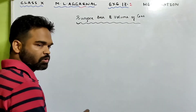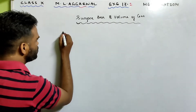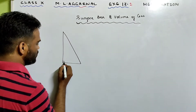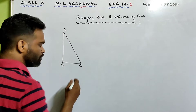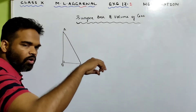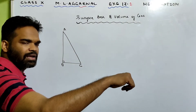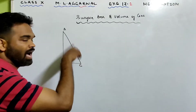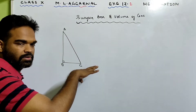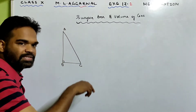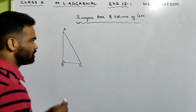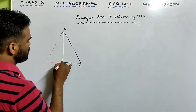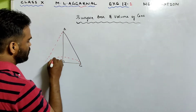First of all we need to understand what is a cone. Look over here. Take a right angle triangle — suppose A, B, C. On revolving this right angle triangle about any of its sides other than the hypotenuse, you revolve it along AB or BC. Then the figure which you get is a cone.